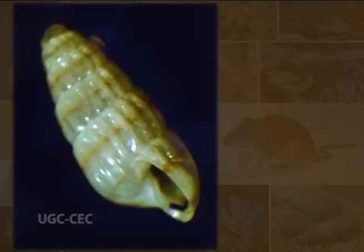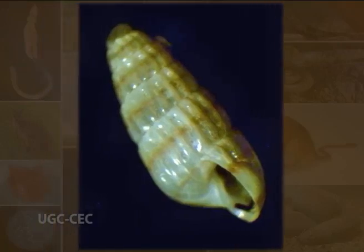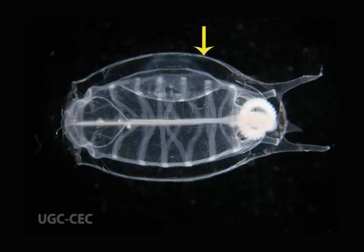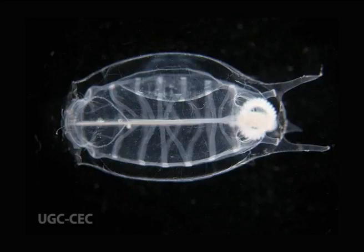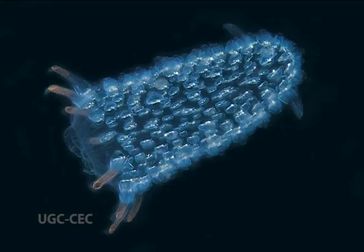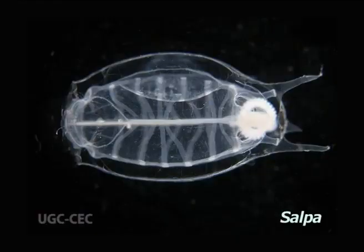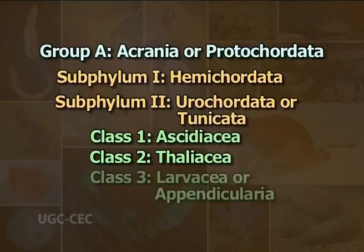Class 2: Thaliacea. The representatives of this class are pelagic, free-swimming forms. Test is a permanent structure and the body is transparent; in many, it is encircled by muscles which form interrupted circular bands. The body is compressed, squirting out water for propelling forward movement. Mouth and anterior lobes are at opposite ends. Tail, nerve cord and notochord are absent in adults. Life history exhibits alternation of generation. Examples are Salpa, Doliolum and Pyrosoma.